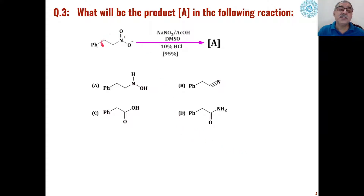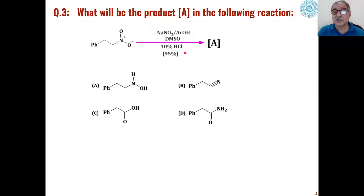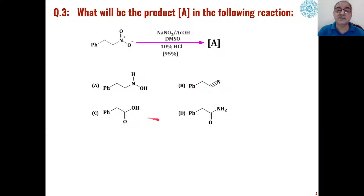The third problem involves organic nitro compounds reacted with NaNO2 in acetic acid, followed by reaction with 10% HCl under acidic conditions. The product is formed in 95% yield. Out of the four choices, which product is formed and by which mechanism does this product formation take place?